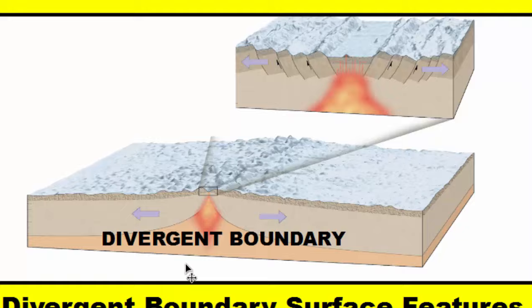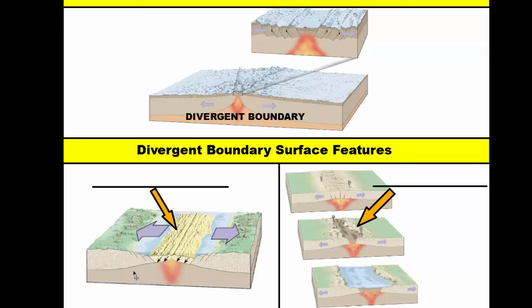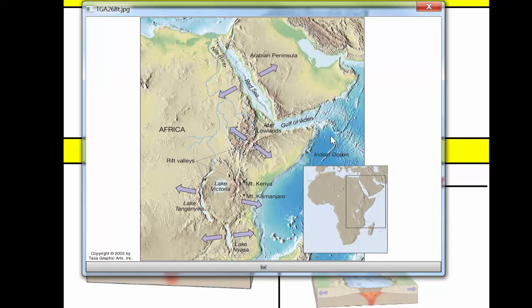Divergent boundaries divide and split in opposite directions. A divergent boundary can create two surface features. One we already spoke about is the mid-ocean ridge, where magma rises up through the crust, spills out onto the surface, creates new ocean floor, and causes seafloor spreading to occur. Even though this occurs in the ocean, divergent boundaries can be found on land as well. When found on land, they are called rift valleys and work very much in the same way. Let's take a look at an example of a rift valley on Earth today.